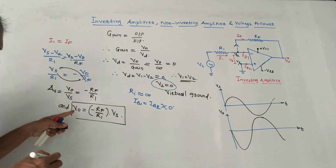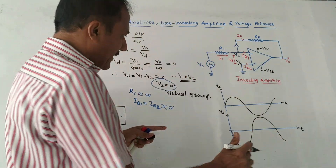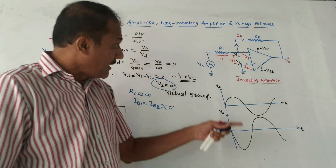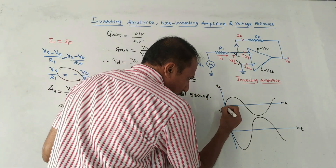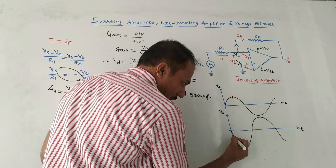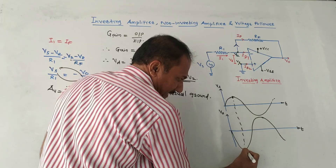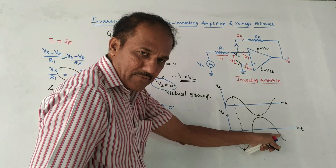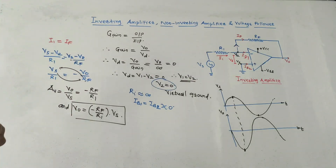Regarding the waveform of the inverting amplifier: the amplifier amplifies the input signal, but since the input is connected to the negative terminal, the output is inverted. When the input is at positive maximum, the output is at negative maximum, and vice versa. The amplitude of the output is also greater than that of the input, as it is amplified.